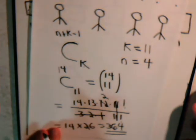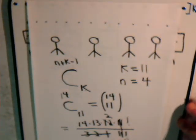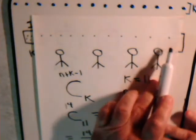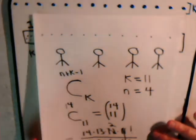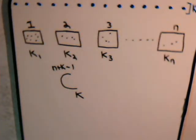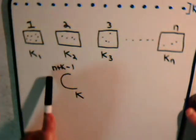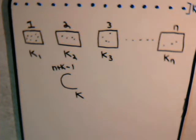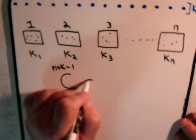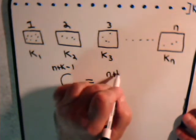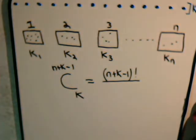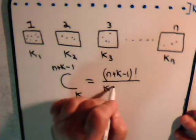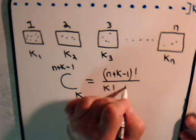We went through that quickly because we've covered combination with repeats problems in previous videos — 11 identical objects distributed among 4 people, each person can receive multiple objects. Going back to our general problem: k is the number of identical objects and n is the number of boxes to distribute them into. The total number of distributions possible comes out to be C(n + k − 1, k), which equals (n + k − 1) factorial divided by k factorial times (n − 1) factorial.